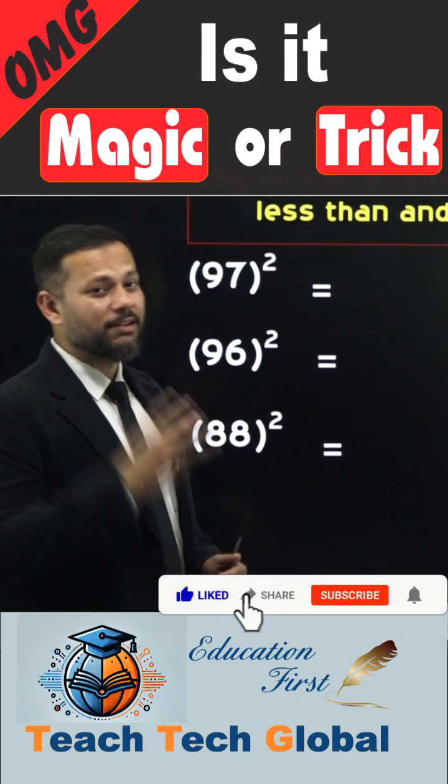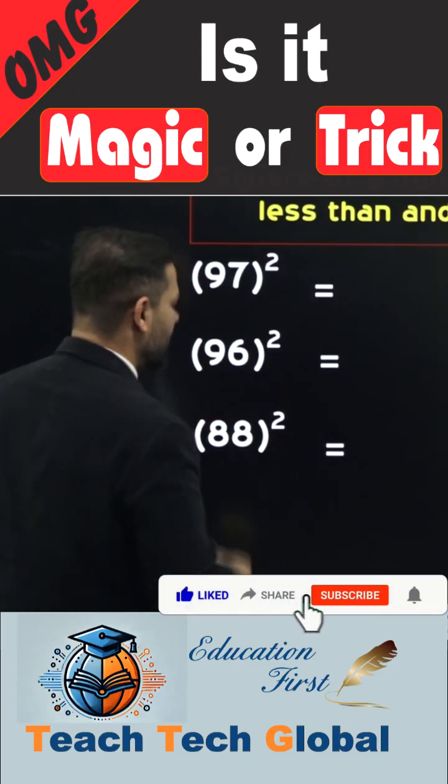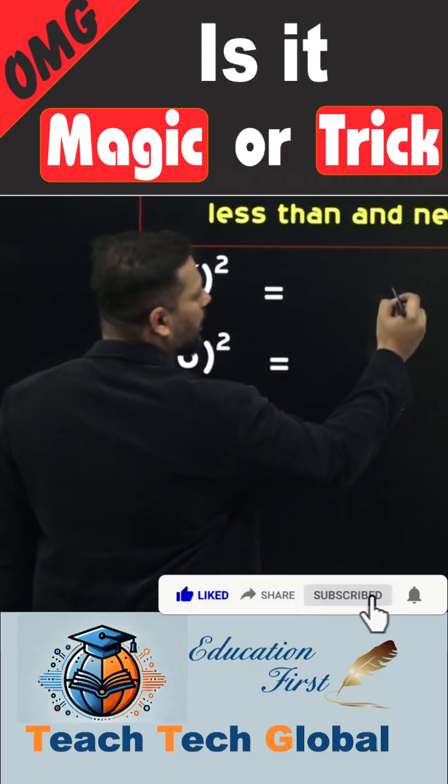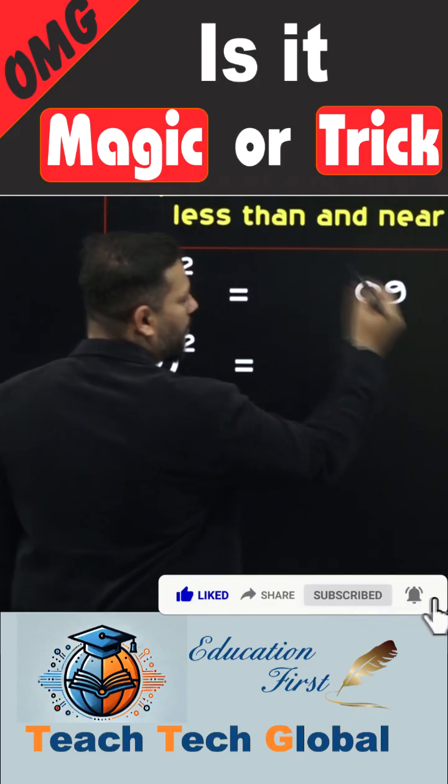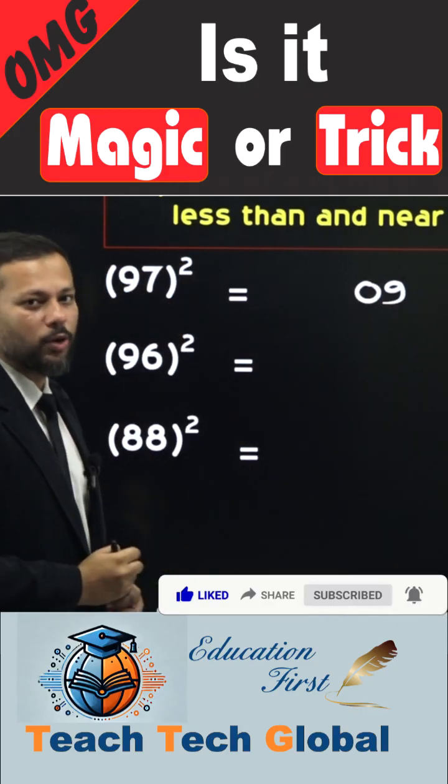97. 97 is 3 less than 100, isn't it? Let us write its square. The square of 3 would be 9, and remember we need to write it in 2 digits. So we have written 09.